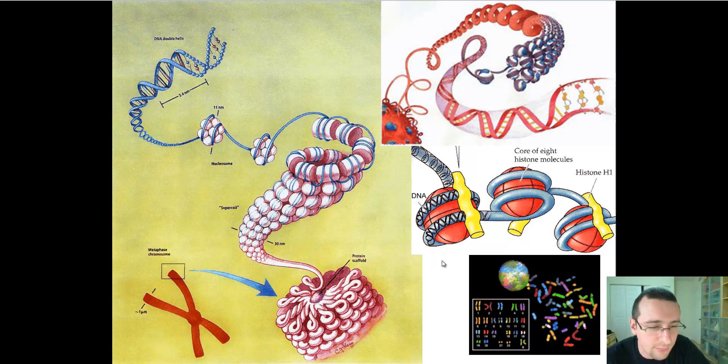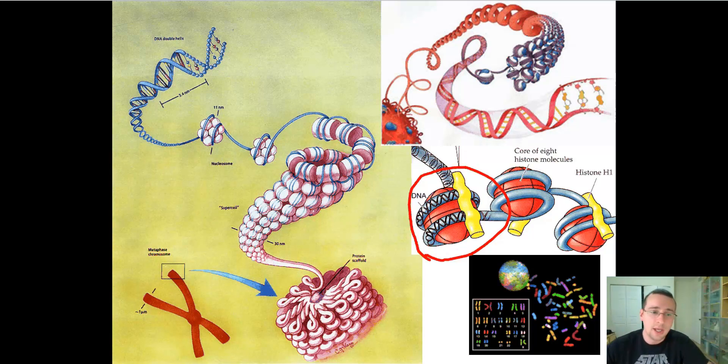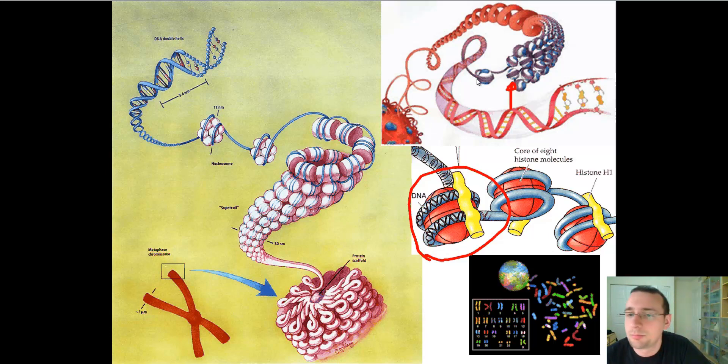So you see, the red one is the surface, and the yellow one is the one that attaches. At that point, we call this the nucleosome.